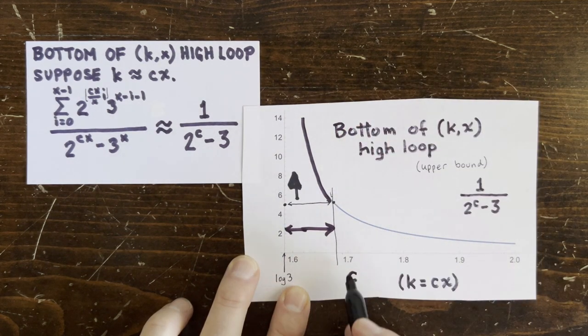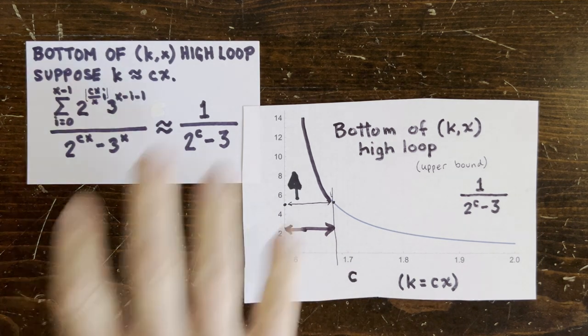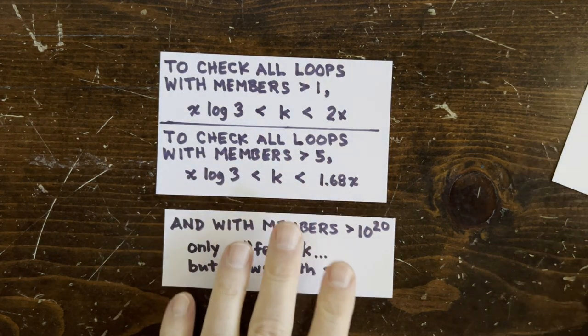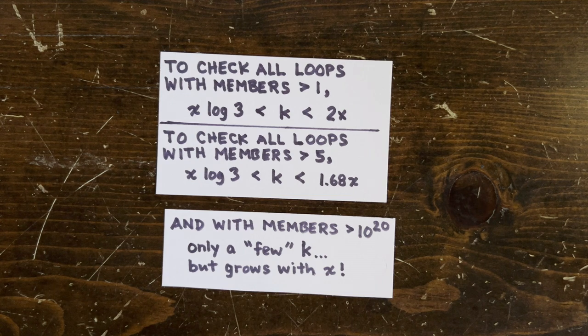Of course, we only care about checking loops whose members exceed 10 to the 20th, not just 5, because any trajectory with a number less than that goes to 1. And in that case, we only need to check a tiny number of k values.